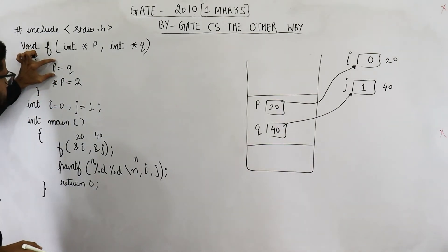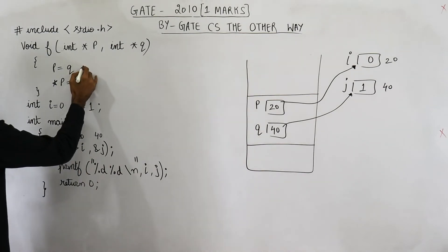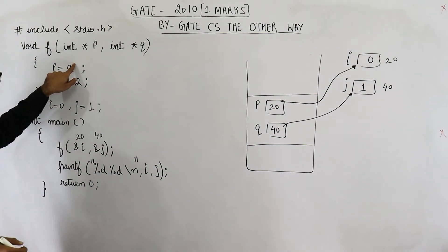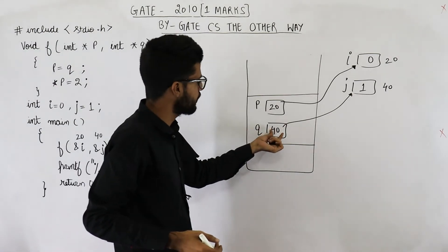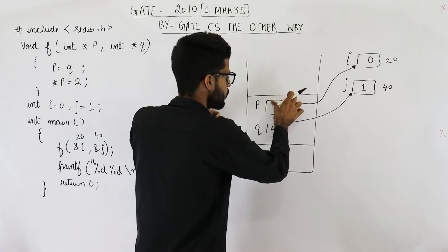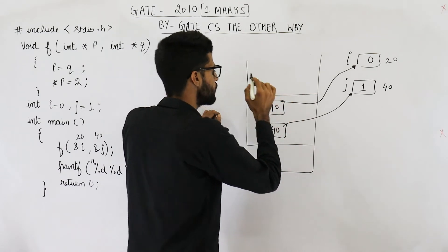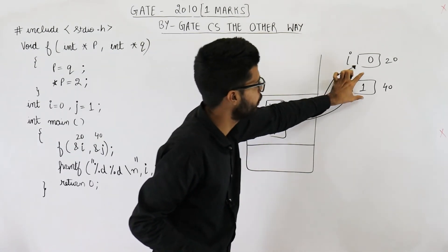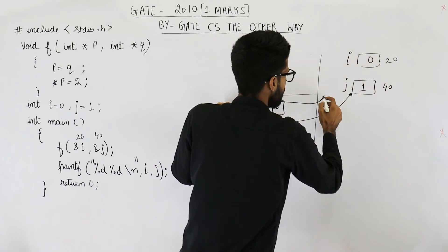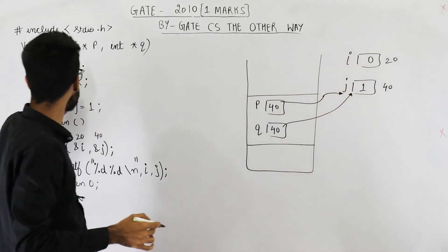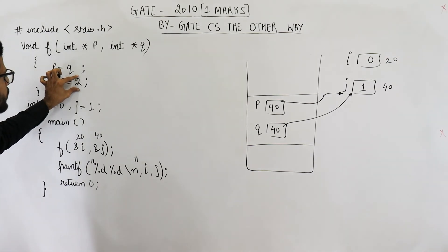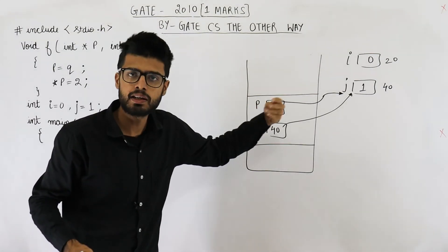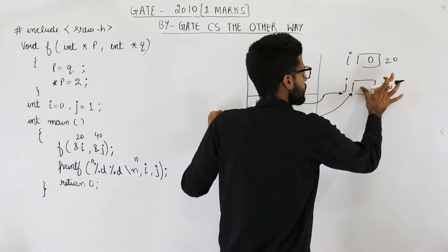The first line in this function is p = q, meaning whatever is saved in q has to be saved in p also. q has a value of 40, so that 40 is now saved in p as well. The next line says *p = 2, meaning the value at address p equals 2. Since address p is now 40, the value at address 40 — which is j — is updated to 2.